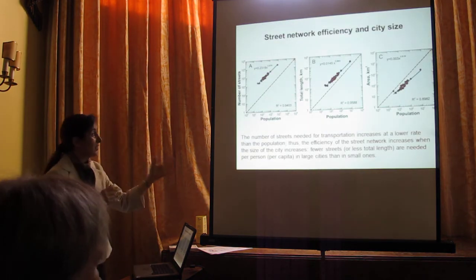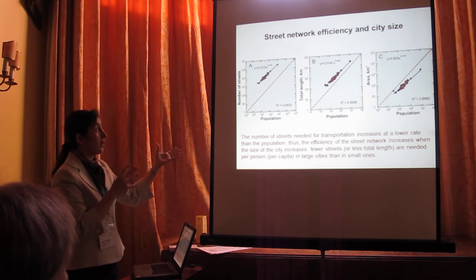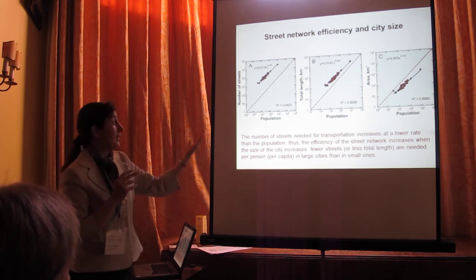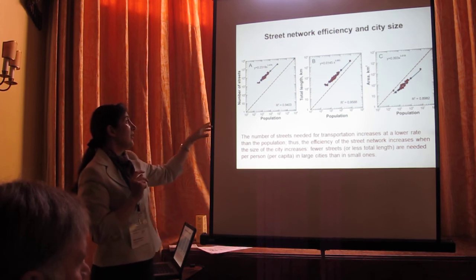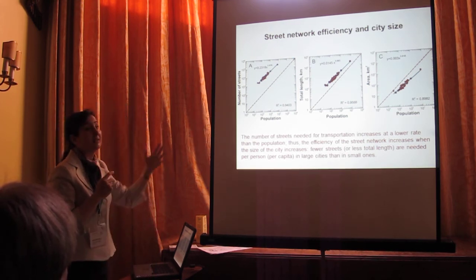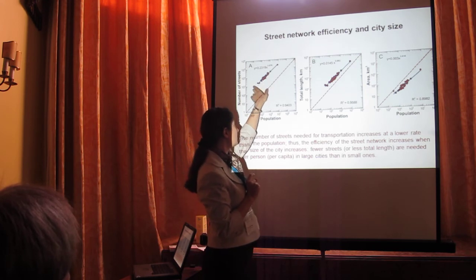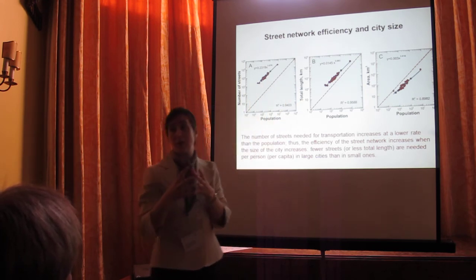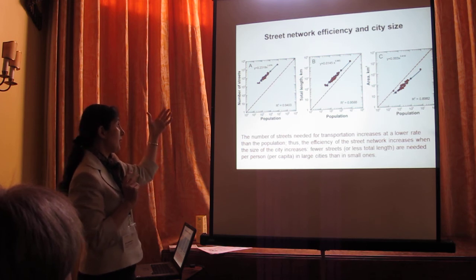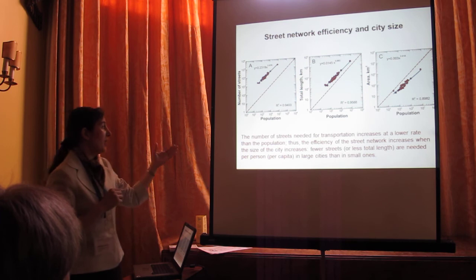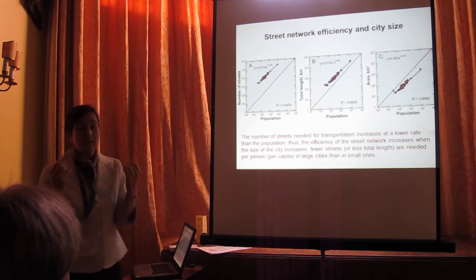We can also relate energy to the efficiency of street networks. Plotting the number of streets, the total street length, and area against population, the broken line indicates a slope of one, meaning the number of streets increases at the same rate as population. The same holds for total length and area, indicating that the efficiency of the street network increases as city size increases.